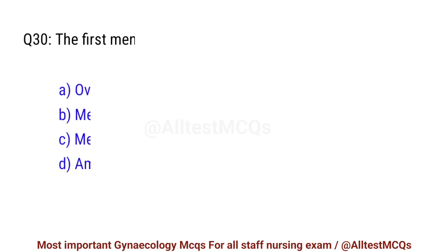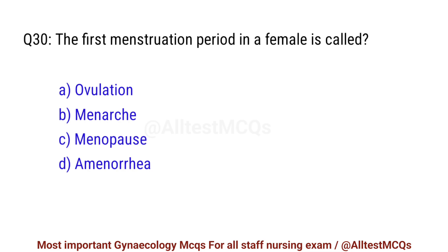Question No. 30. The first menstruation period in a female is called? Correct option is B. Menarche.